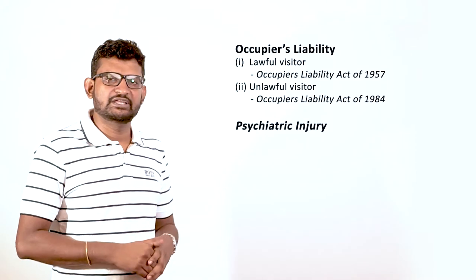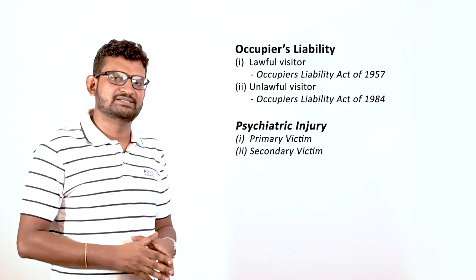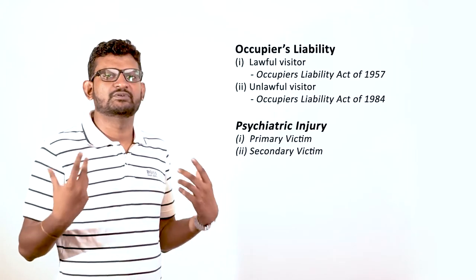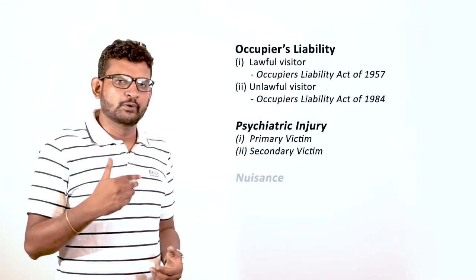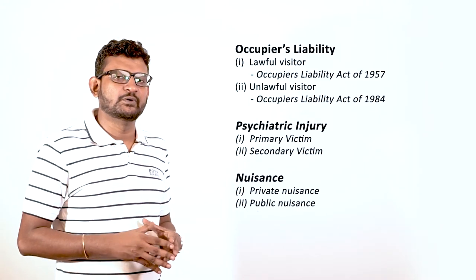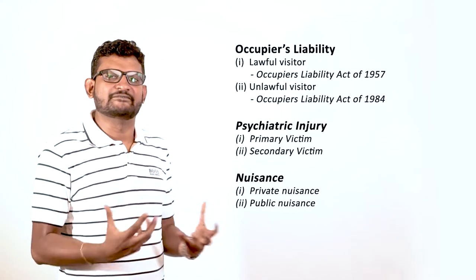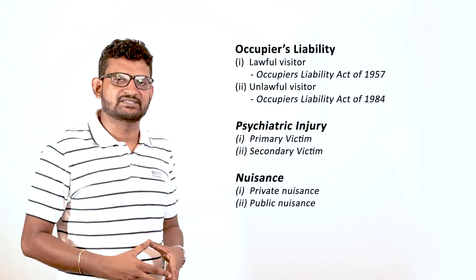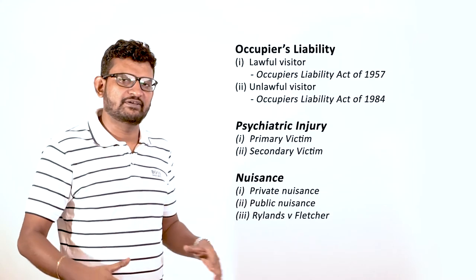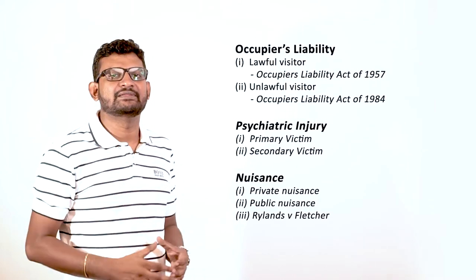For psychiatric injury, you focus on primary victim and secondary victim, and often this differentiation between primary and secondary is almost outdated. For nuisance, you have private nuisance which is linked to land, public nuisance which is linked to the enjoyment of the lives of Her Majesty's subjects, and you have Rylands versus Fletcher — when you bring something foreign to your land and it escapes the land.